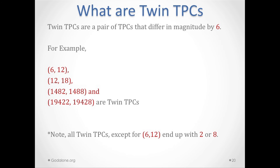We're going to make it more complicated. We're looking for TPCs that differ from each other by only 6 — these are called twin TPCs, or 2TPCs. For example, 6 and 12 are a pair, 12 and 18 are a pair, 1482 and 1488 are a pair, and 19,422 and 19,428 are also twin TPCs.